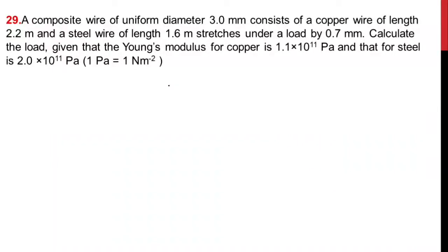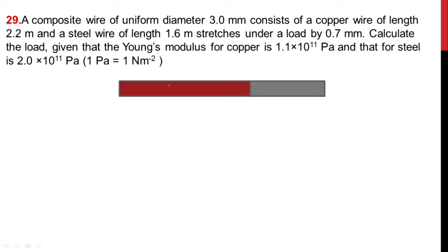Hello everyone. A composite wire of uniform diameter 3 mm consists of a copper wire of length 2.2 meter and a steel wire of length 1.6 meter, which stretches under a load by 0.7 mm. Calculate the load, given that the Young's modulus of copper is 1.1×10¹¹ and that of steel is 2×10¹¹ pascal.